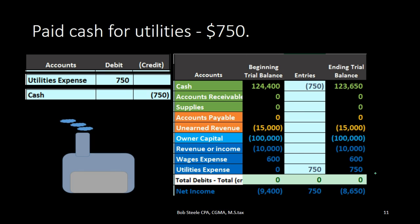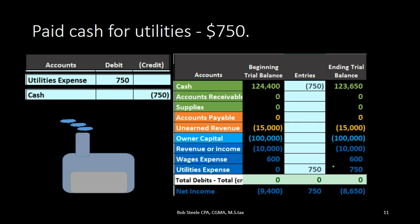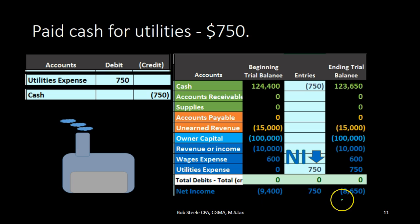Thinking about net income: the $750 utilities expense went up, bringing net income down. Net income is calculated as revenue of $10,000 (credit) minus wages expense of $600 (debit) minus utilities expense of $750 (debit). The prior net income balance of $9,400 minus $750 brings net income down to $8,650.